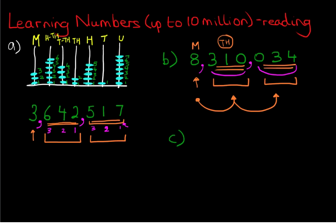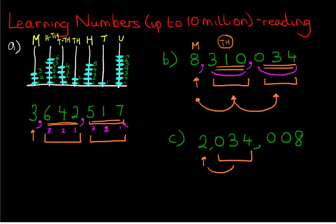We'll just write one more and see if we can work this one out. Now this one — I have put the commas in. How would you read that? Again, we start over here: two million, and thirty-four thousand. So we say two million, thirty-four thousand. And the last bit is just eight. So this number — because it's got quite a few zeros, just be careful — we say two million, thirty-four thousand, and eight.